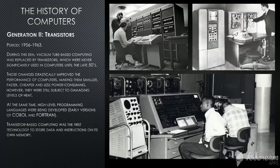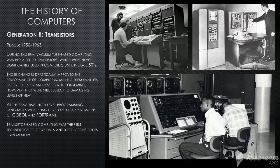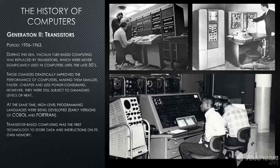Generation 2: Transistors. The period is 1956 to 1963. During this era, vacuum tube-based computing was replaced by transistors, which were not significantly used in computers until the late 50s. Those changes drastically improved the performance of computers, making them smaller, faster, cheaper, and less power-consuming. However, they were still subject to damaging levels of heat. At the same time, high-level programming languages were being developed, such as early versions of COBOL and FORTRAN. Transistor-based computing was the first technology to store data and instructions on its own memory.